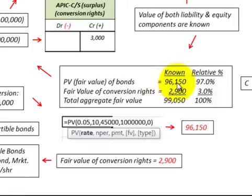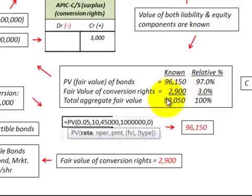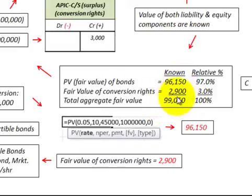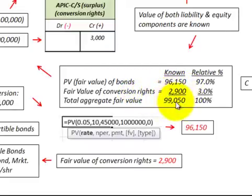Let's figure out how we would allocate the amounts between the debt portion and the equity portion. We take the present value of those bonds at $96,150 without the conversion rights, and then we take the fair value of those conversion rights of $2,900, and total them to get $99,050. To figure out a relative percentage, we divide $96,150 by $99,050 to come up with 97% assigned to the debt portion. For the equity portion, we divide $2,900 by $99,050 to come up with 3%, giving us a total of 100%.